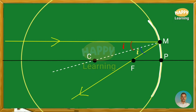The angle made by the normal with the principal axis is also equal to i, according to the principles of mathematics. Then, the angle at F is the exterior angle, which is equal to the sum of the two opposite interior angles. So, this angle is equal to 2i.